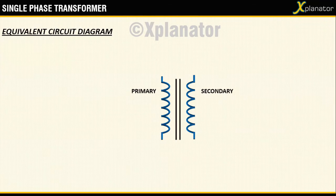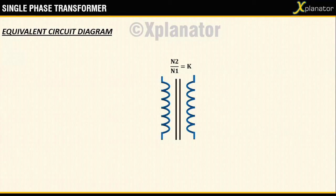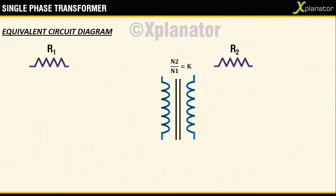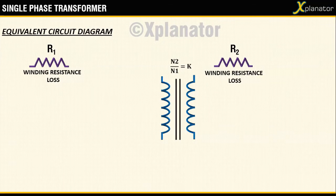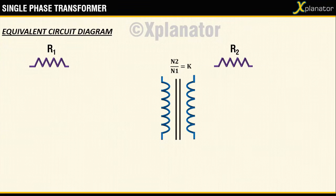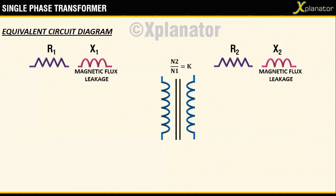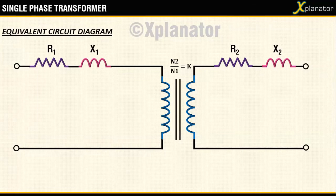Their turns ratio is denoted as N2 by N1 which equals to K. The first loss that we are going to consider is that due to the winding resistance. It is indicated by R1 and R2. The next loss is due to leakage of magnetic flux shown by X1 and X2. Join the elements to form primary and secondary circuit.